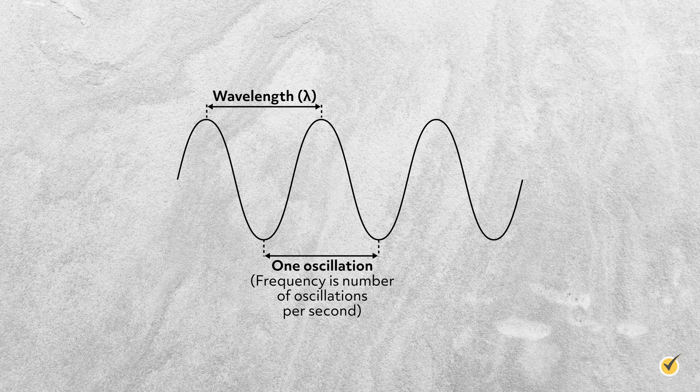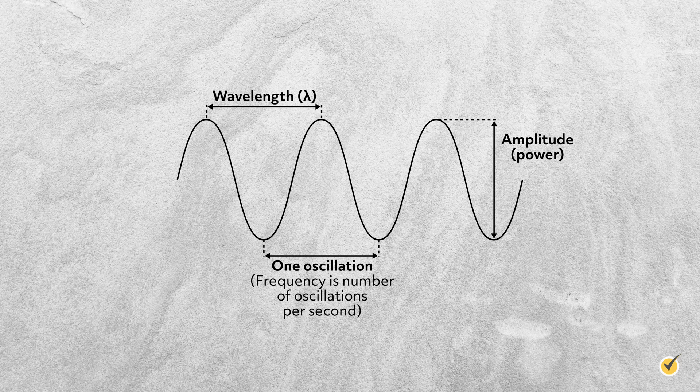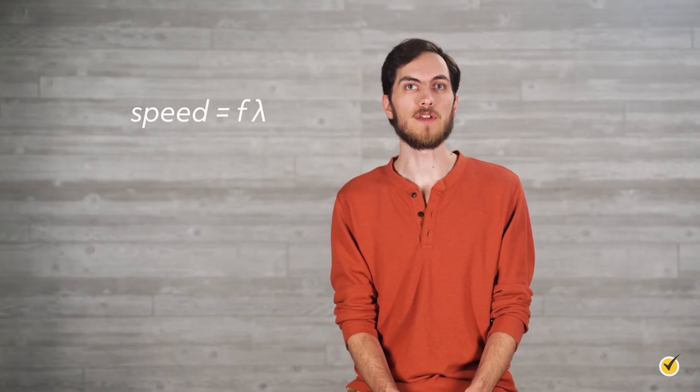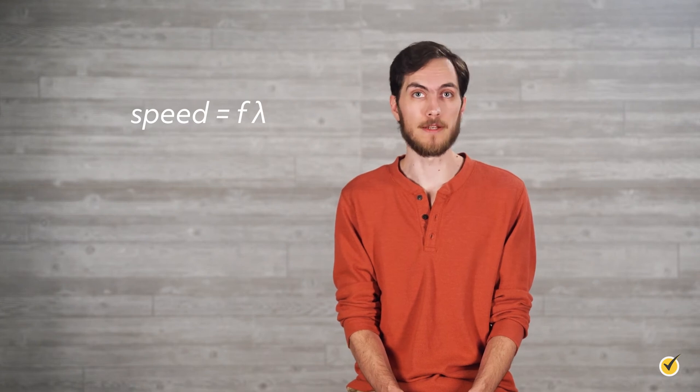The trough is the lowest part of the wave and the crest is the highest. The amplitude describes the height of the wave, which is related to the energy of the wave. The speed of any wave is the product of frequency and the wavelength, and as such, frequency and wavelength have an inverse relationship for any given speed.